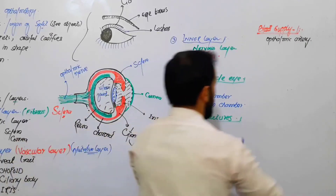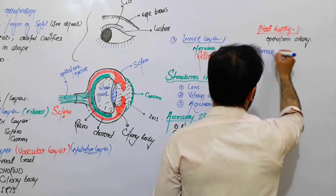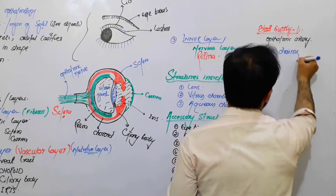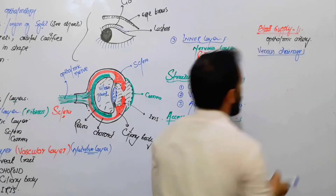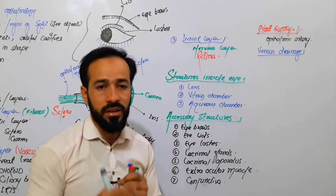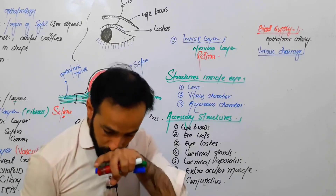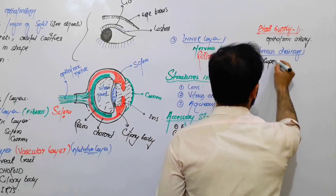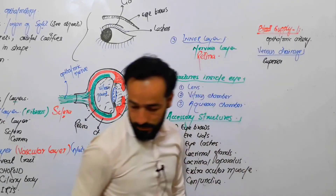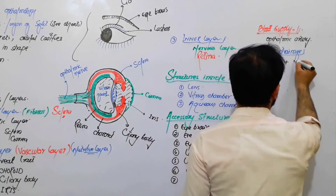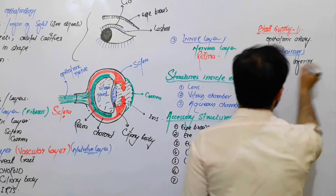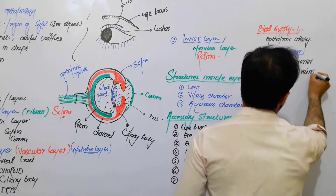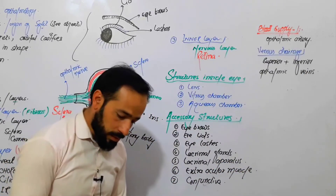What is the venous drainage of the eye? Which veins are responsible to drain the eye? The eye drains its venous blood into two veins — the superior and inferior ophthalmic veins.